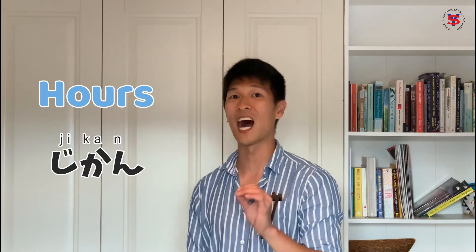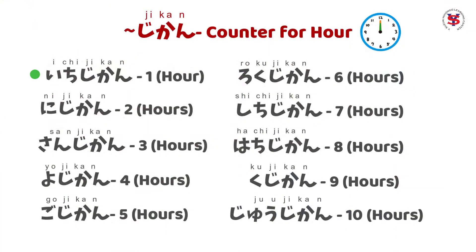Next naman is hours. So for hours, we use jikan. As in: ichi-jikan, ni-jikan, san-jikan, yo-jikan, and so on. No exceptions. Thank God! Hallelujah!